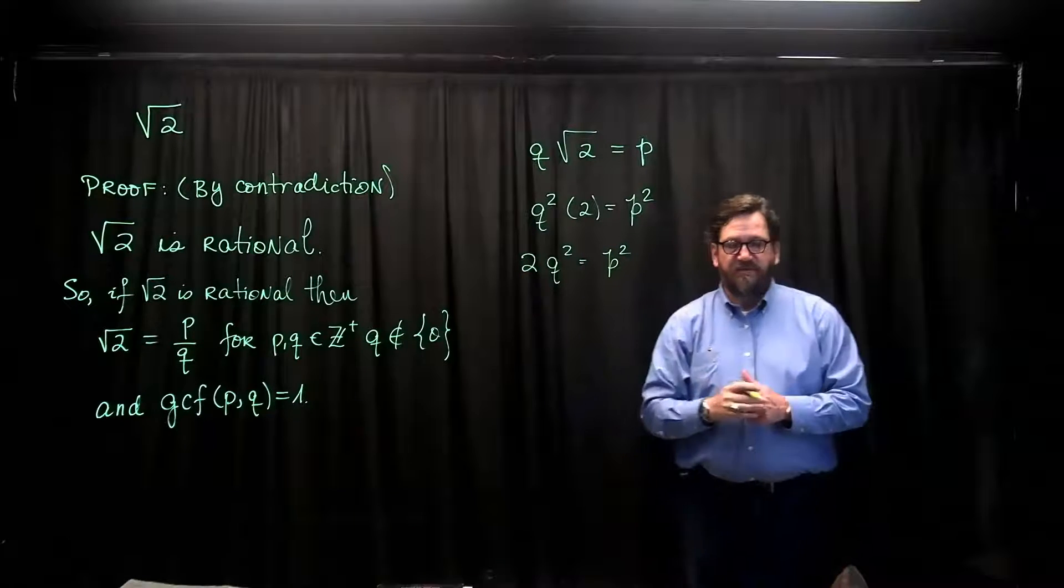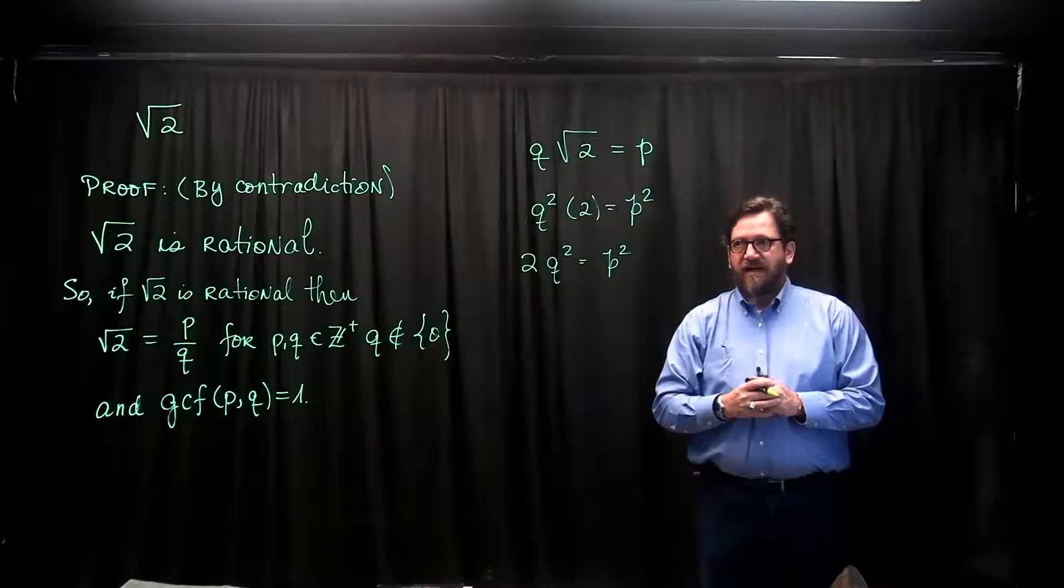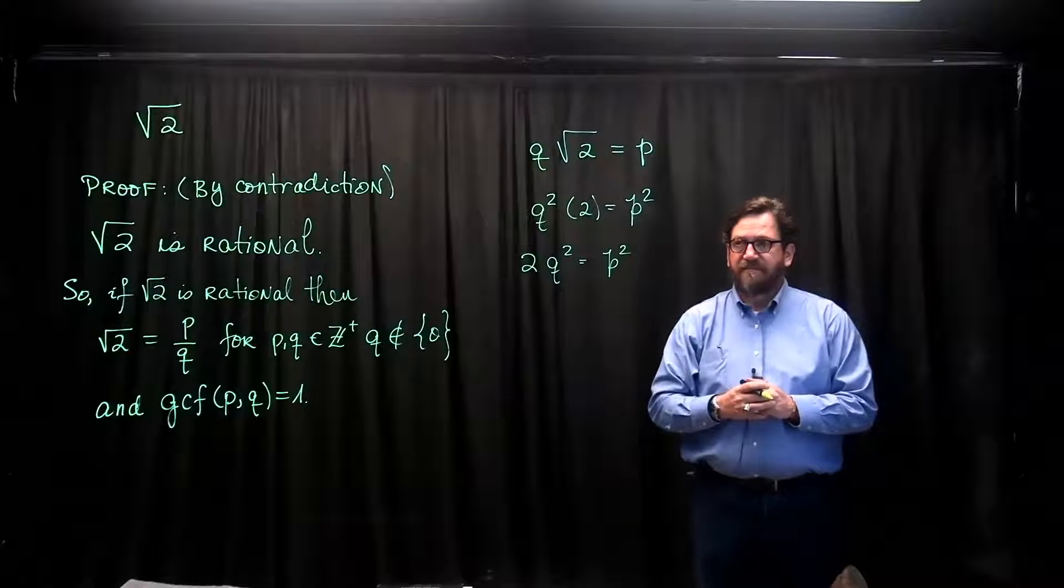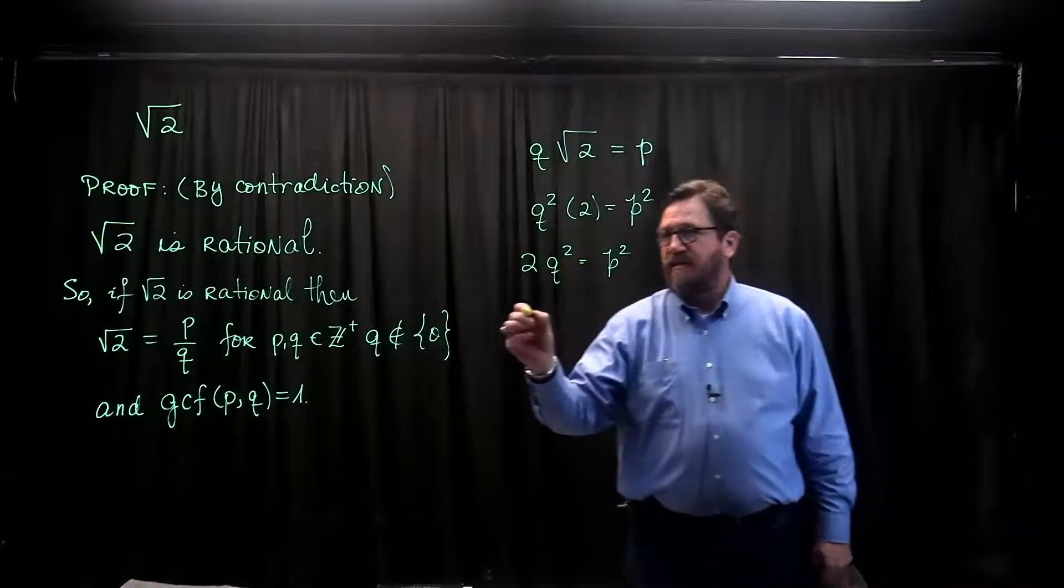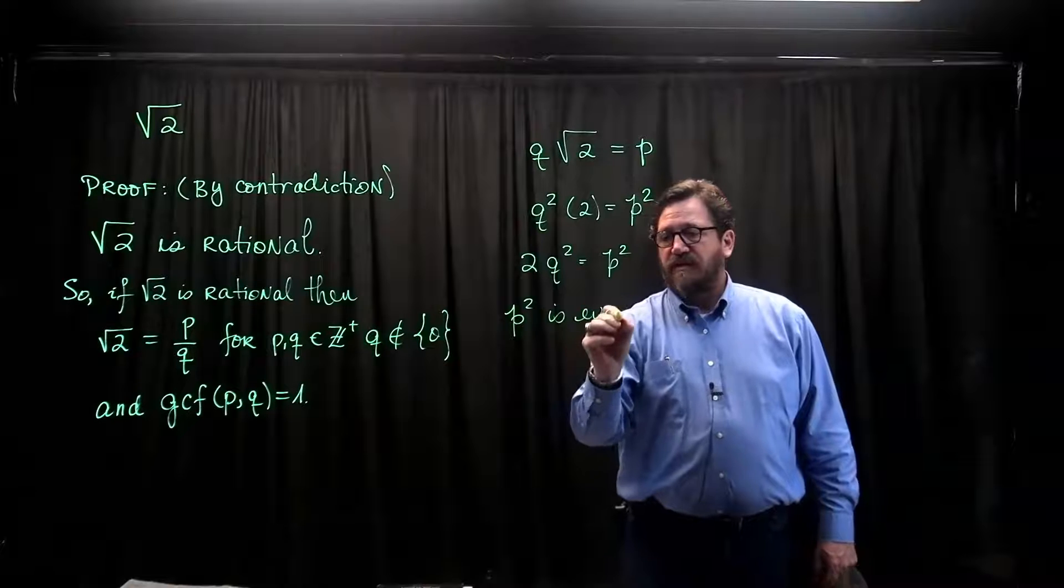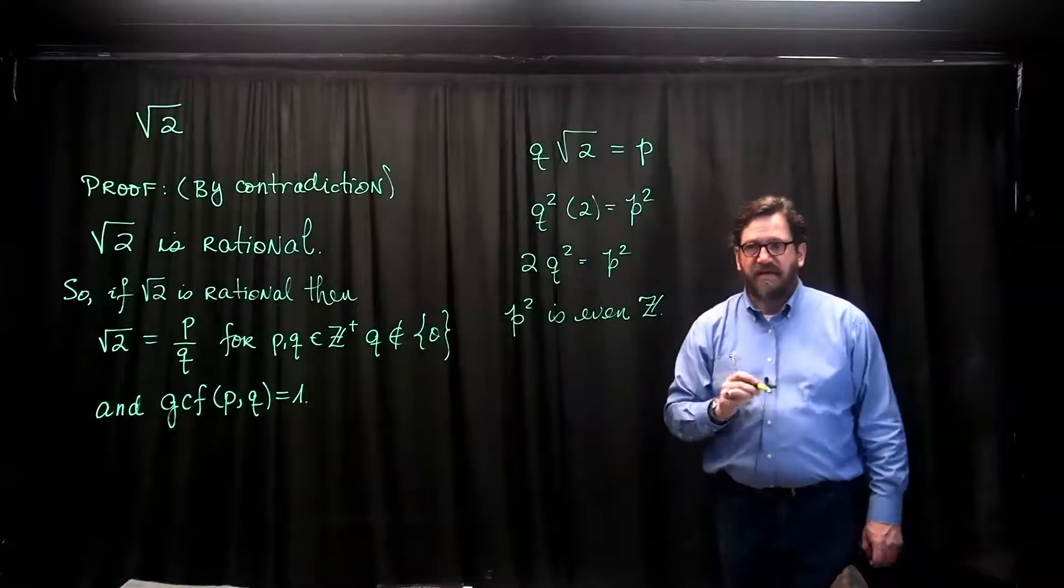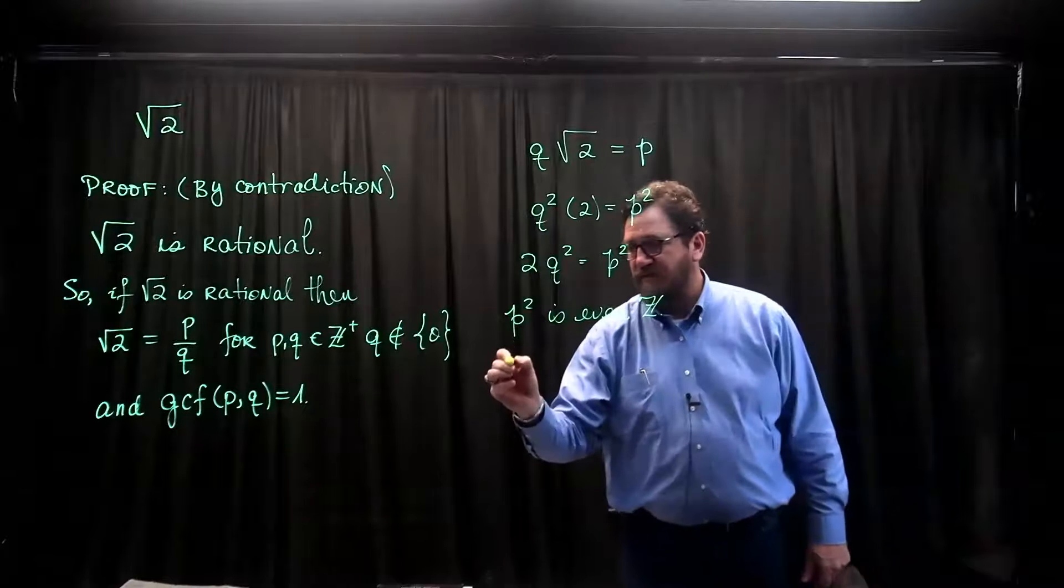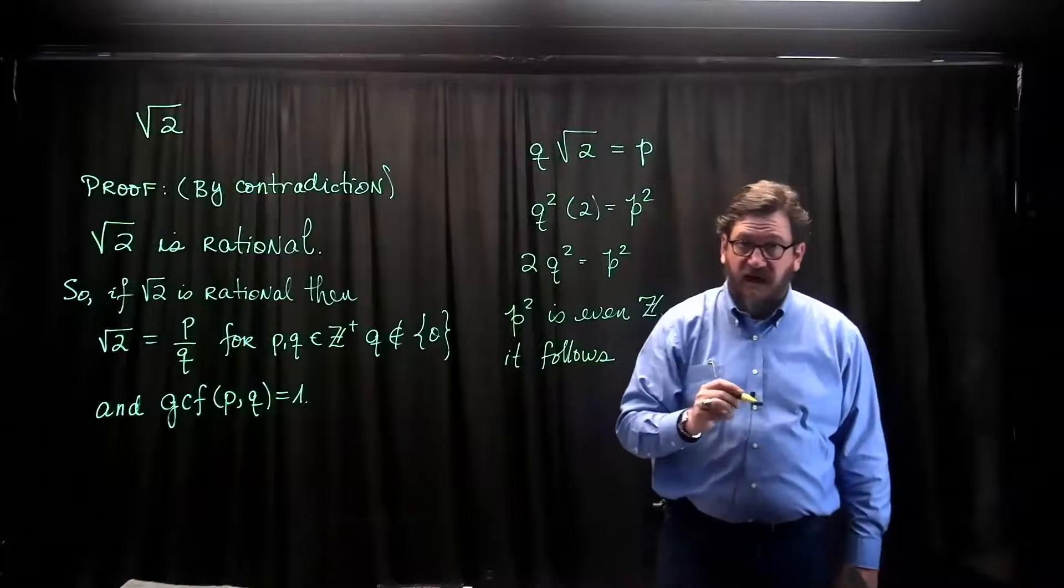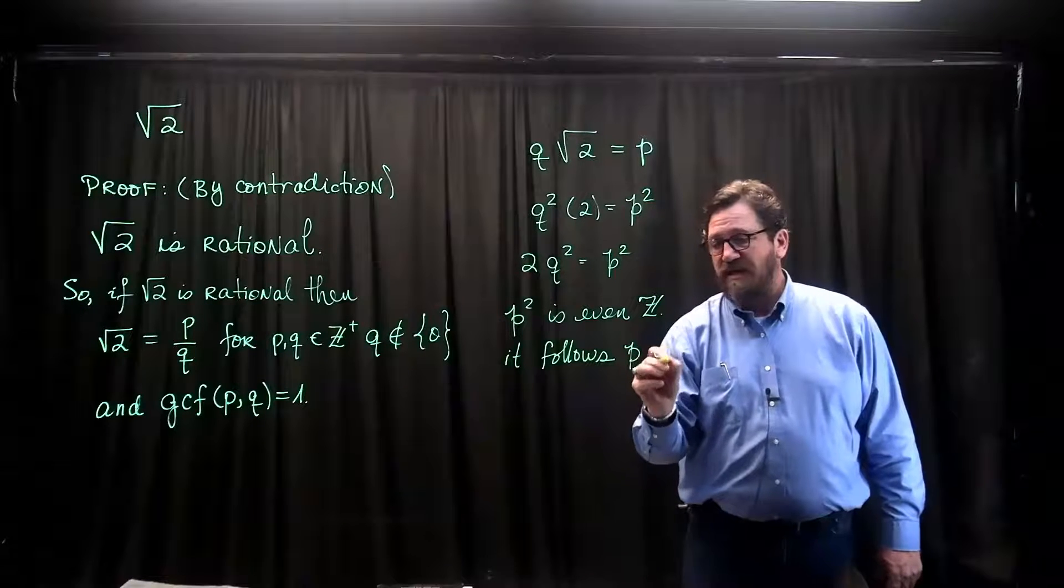Now here's where it gets interesting. No problem whatsoever, except for the fact that we've got this doggone nasty 2 floating around. And this means, if we look at it, that p squared is an even integer. Now if p squared is an even integer, it follows, and I'm going to say this without proof, but it does, it follows then that p is even.